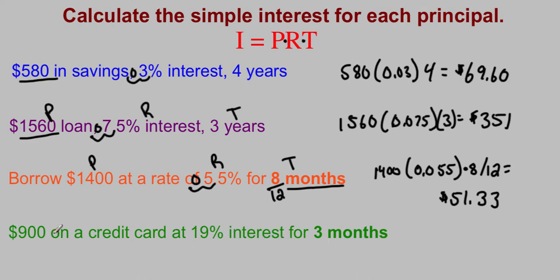How about the next one? $900 on a credit card at 19% interest, so here's our principal, here's our rate, here's our time, but again we're dealing in months, so we'll have to take that into consideration.